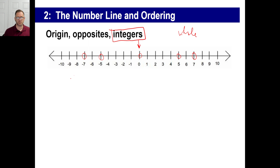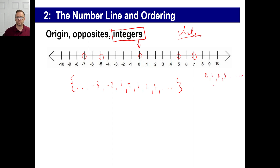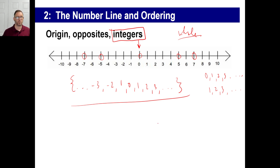An integer is any number on the number line. It goes to infinity in the negatives, includes zero, then one, two, three, and so on to infinity to the right. Whole numbers start at zero — one, two, three and so on. Natural numbers start at one. Those are all integers. Just make sure you know the term. It can be anything like negative nine, negative four, or three. Fractions are not integers — 6.2 is not an integer.